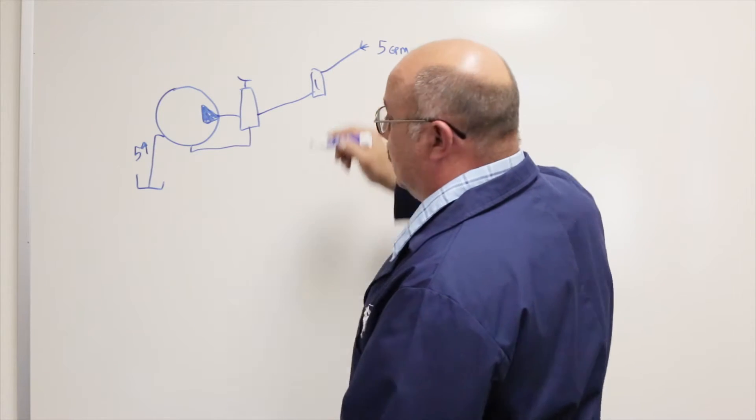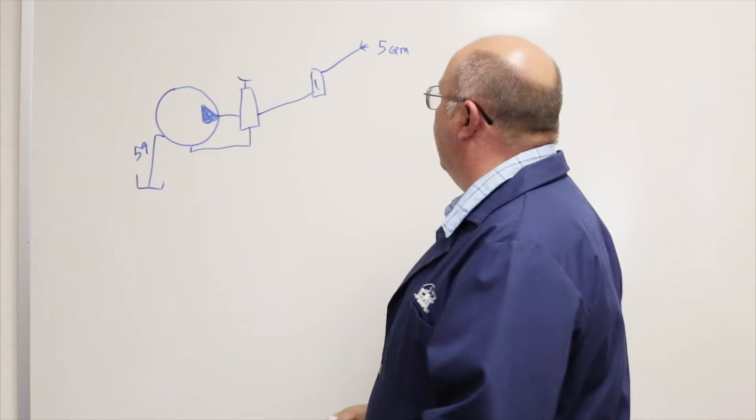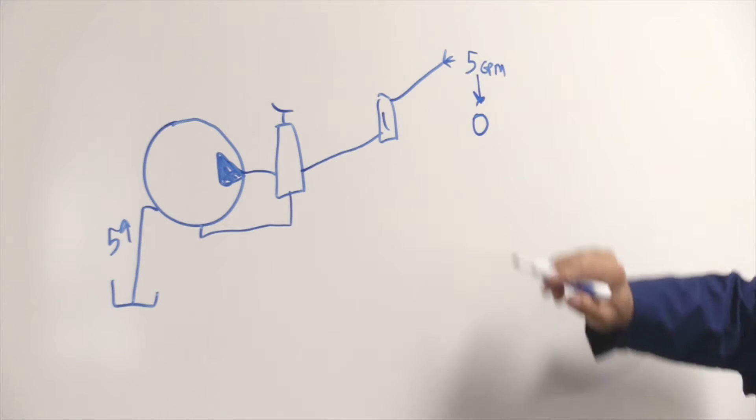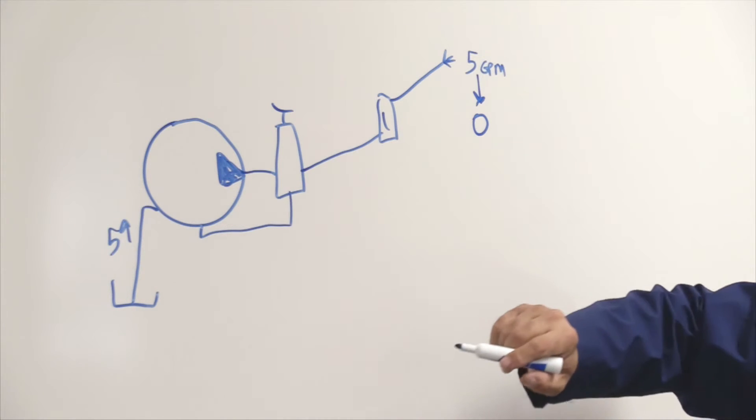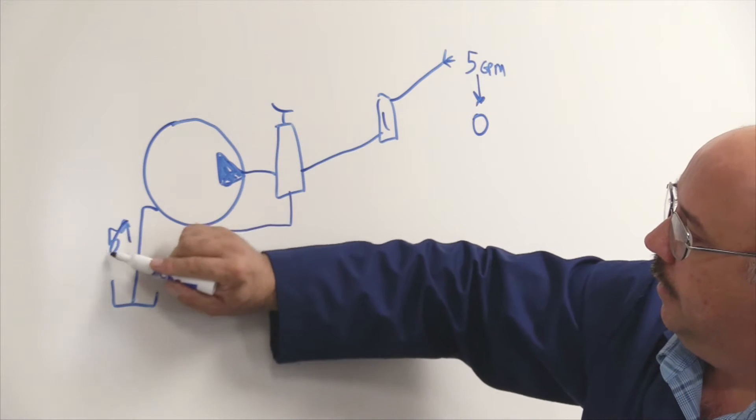But as soon as I close this gun to move things or change position, and I shut the gun off, then this drops to zero gallons per minute because I have no flow, which also makes the incoming water go to zero.